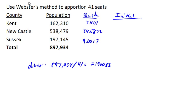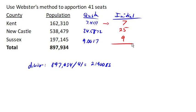So in this case, 7.4 rounds down to 7, 24.58 rounds up to 25, and 9.0017 rounds down to 9. And then we look at our total here, and in this case the total is exactly what we need — it's 41 seats, and so we are done.